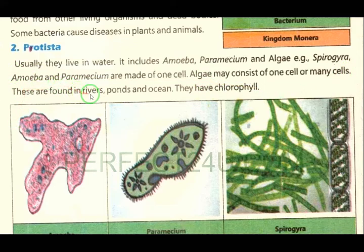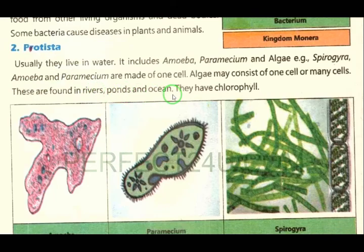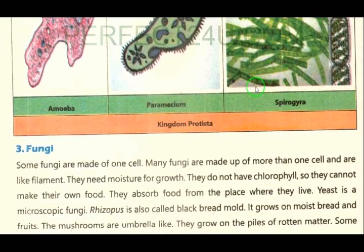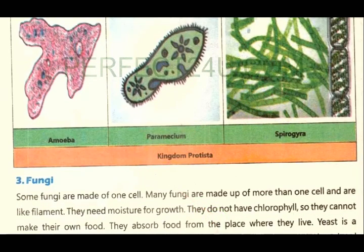Protista organisms are found in rivers, ponds, lakes, and oceans. They have chlorophyll — da khabara ba yad satay. Chlorophyll is the green substance that helps them prepare their own food, just like plants. Thank you. Nor ba sabawayuka khiri.